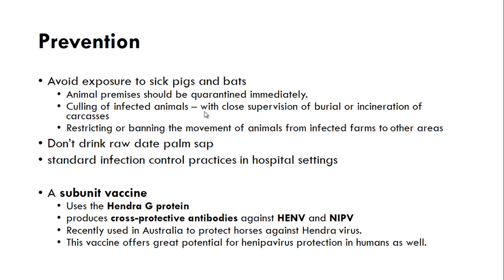Prevention measures include avoiding exposure to pigs and bats, quarantining animal premises immediately, culling infected animals with close supervision of burial or incineration of carcasses, and restricting or banning the movement of animals from infected farms. Do not consume raw palm sap. Standard infection control practices must be employed in hospital settings.